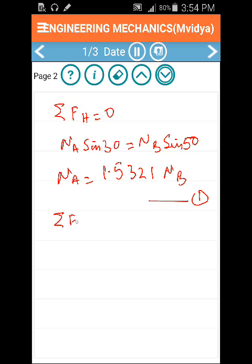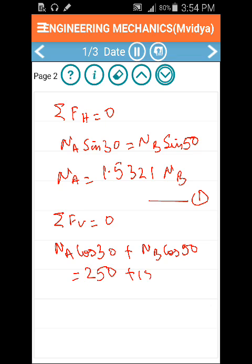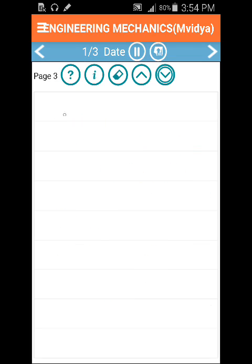My vertical forces summation will also be 0 to maintain equilibrium. Vertical forces are NA cos 30 acting upwards and NB cos 50 acting upwards will equal the downward forces which is 250 plus 150, that is 400 Newtons.